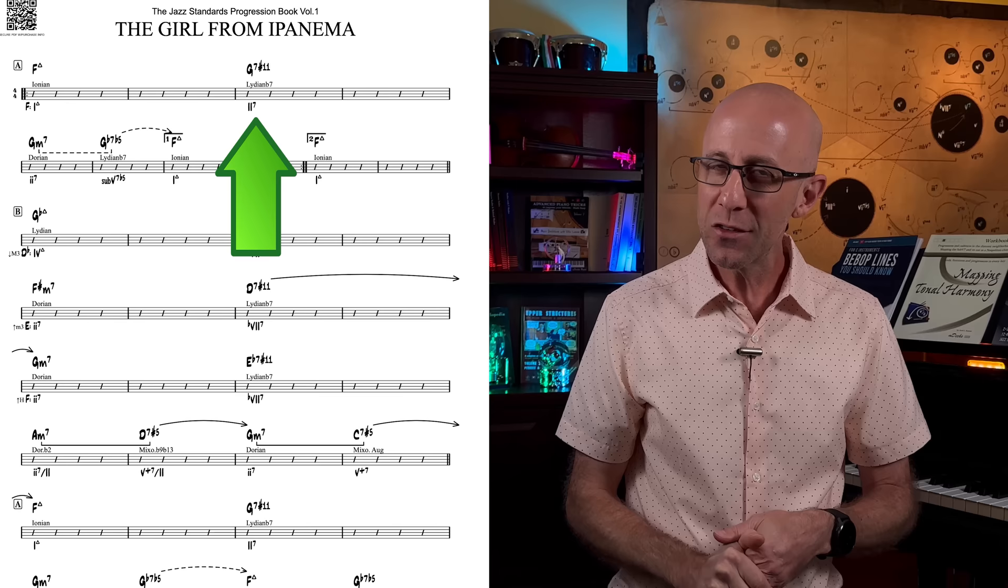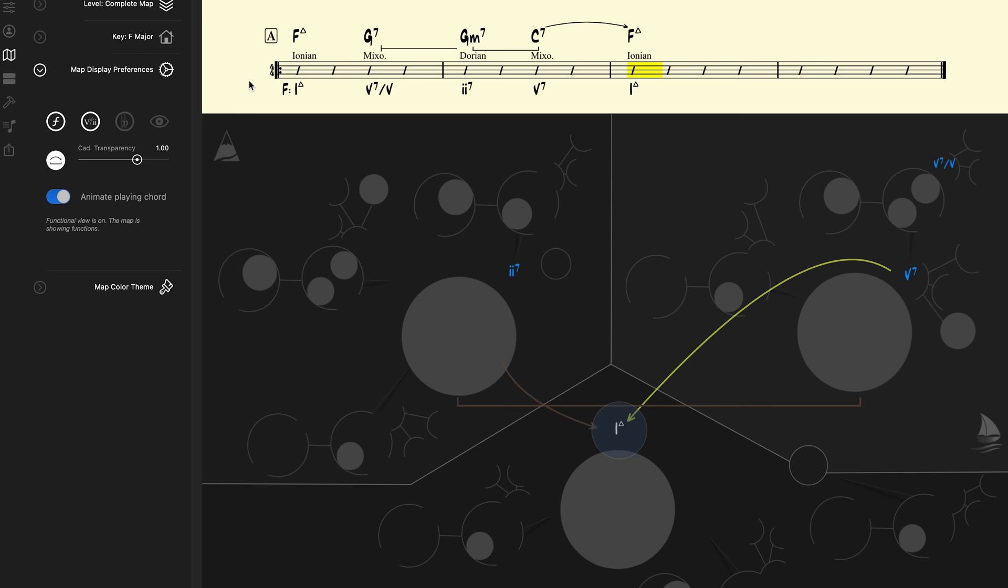You'll find this chord in many jazz standards, like in Take the A Train, and also the Safinado, another Jobim song. So the path 1 major 7, 5-of-5, 2-5-1 turns into a 1 major 7, 2-7 sharp 11, 2-5-1.